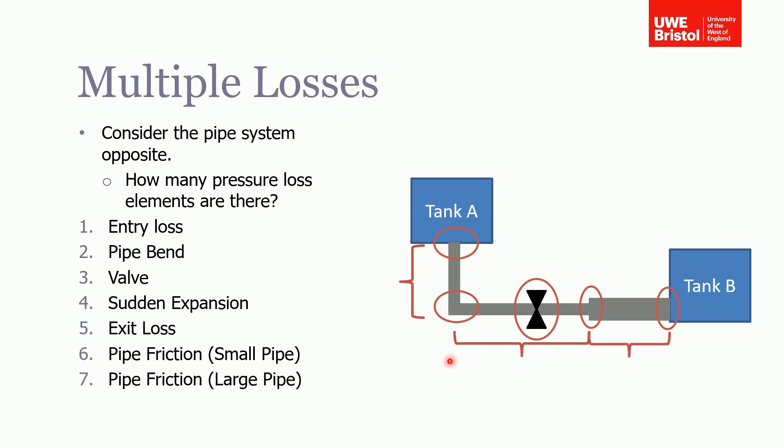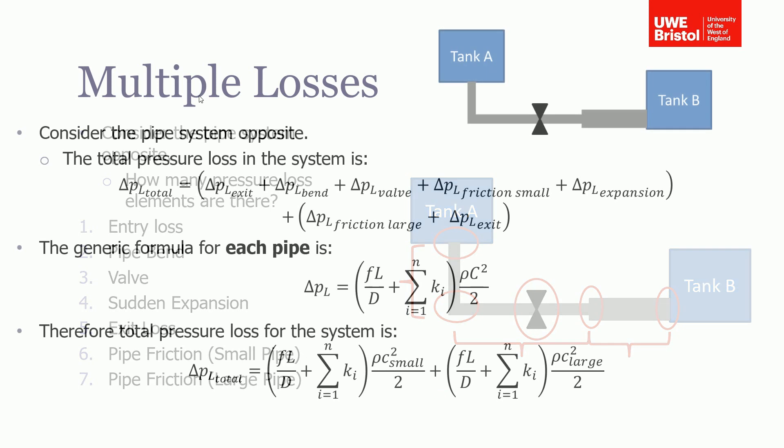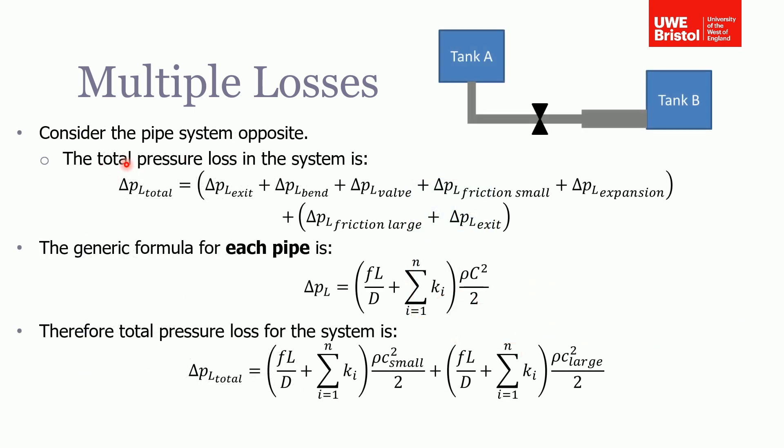So this is it written out in full. The total pressure loss in the system is the pressure loss associated with the exit, the bend, the valve, the friction in the small pipe and expansion—and you'll see why I bracketed that in a minute—